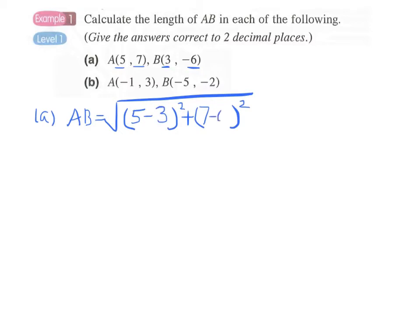We can do it mentally: 7 minus the negative of 6 will be 7 plus 6. This is the square of 2 and this is the square of 13.